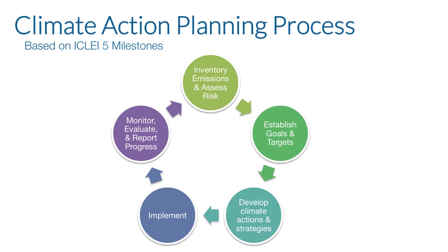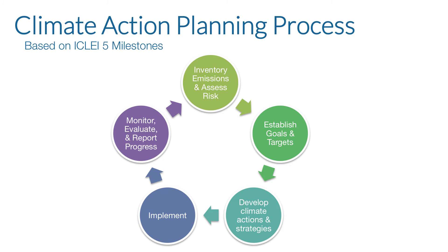Now I'm going to describe the climate action planning process — in other words, how you would go about actually creating plans, actions, or policies that your community could move forward with. This is based on a well-known framework from ICLEI, Local Governments for Sustainability, called the Five Milestones. Basically, we start at the top. The first thing that communities need to do is inventory their emissions: how much greenhouse gas emissions are they creating, and what are the primary sources? They'll also want to conduct a risk or vulnerability assessment to identify parts of the community that might be impacted by climate change — for example, if you're a coastal community, you might be concerned about sea level rise.